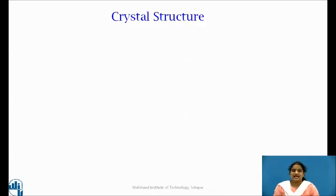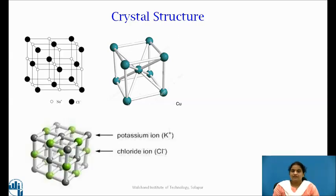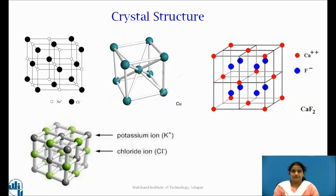In crystals like aluminum, copper, sodium and barium, the basis is a single atom. Then, in sodium chloride or potassium chloride, the basis is diatomic. Whereas, in crystals like CaF2, the basis is triatomic. So students, are you getting this concept of basis and crystal formation clear?